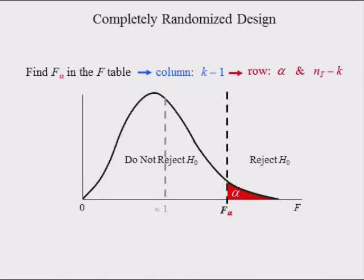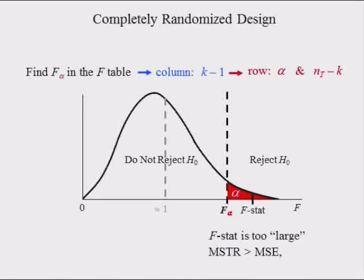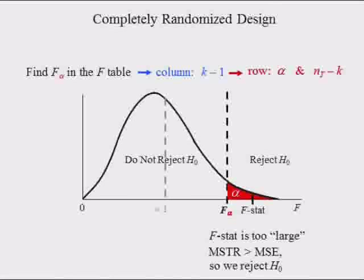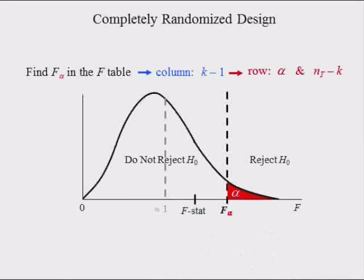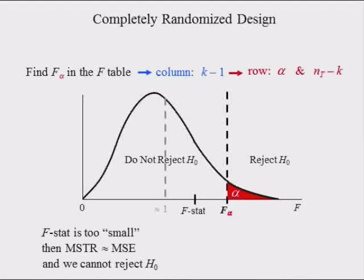The critical value also defines the do-not-reject and reject-null regions. If the F-stat is in the reject region, the F-stat is too large, which suggests that the mean square due to treatments is greater than mean square due to error — hence the null hypothesis is probably not true, meaning we can reject it. If the F-stat is in the do-not-reject region, it suggests that the mean square due to treatments is probably equal to the mean square due to error, and so the null hypothesis is probably true, meaning we cannot reject it.